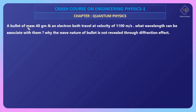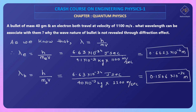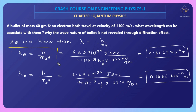Hello friends, in this question it is given that a bullet of mass 40 grams and an electron both travel at a velocity of 1100 meters per second. What wavelength can be associated with them, and why is the wave nature of the bullet not revealed through diffraction effect? So here I have the solution directly presented to you, and how to solve it — because you have limited time in your exam. I have a problem-solving trick and you can use a calculator for the calculation. Here we calculate the wavelength for the electron using the formula.